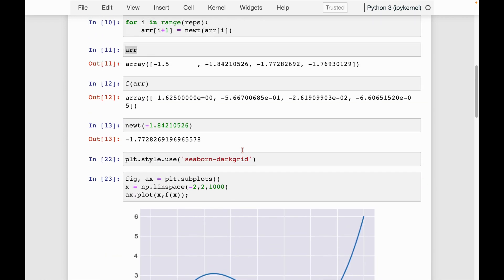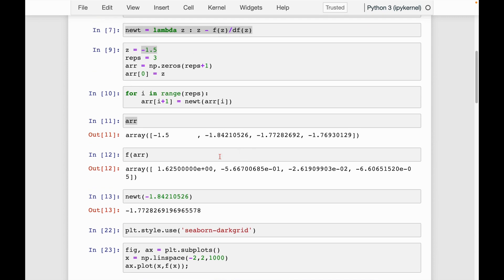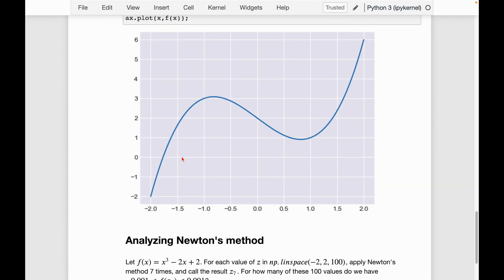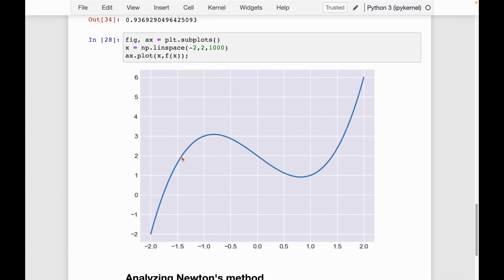So pretty far away from zero versus if we recall, I'm going to scroll up to our old code. Remember when we applied our function f to this array, the last value was very close to zero. So it's negative six by 10 to the negative five. So definitely much worse.